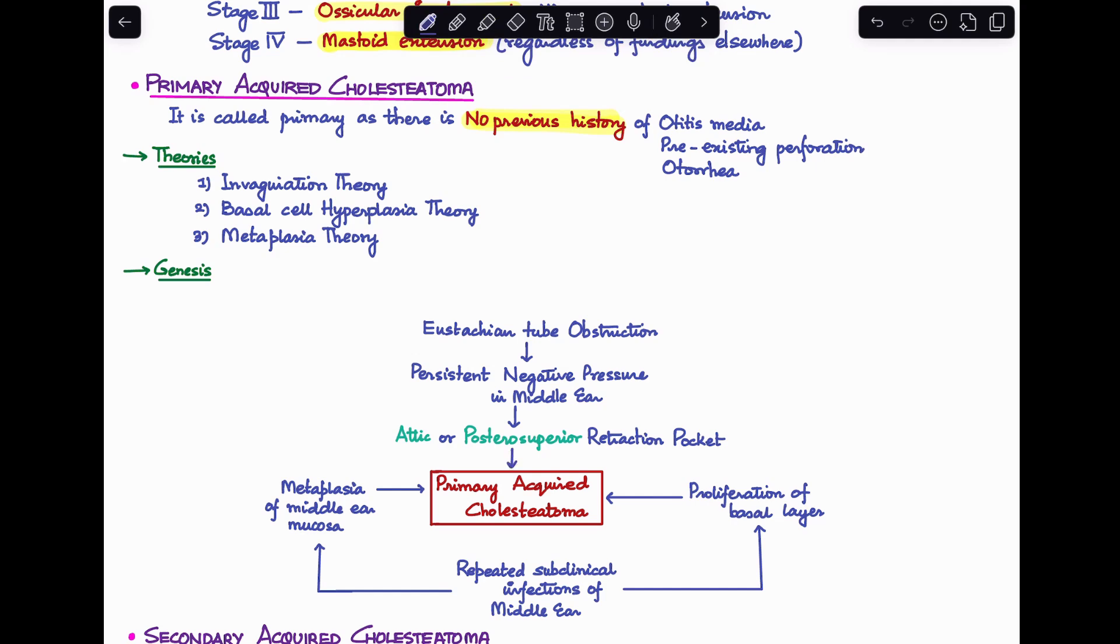I have drawn a diagram which will show you the genesis of primary acquired cholesteatoma. One theory is eustachian tube obstruction leading to persistent negative pressure in the middle ear, leading to attic or posterior-superior retraction pocket, which leads to primary acquired cholesteatoma. On the other hand, repeated subclinical infections of middle ear can undergo metaplasia of middle ear mucosa leading to cholesteatoma, or there can be proliferation of basal layer leading to primary acquired cholesteatoma.